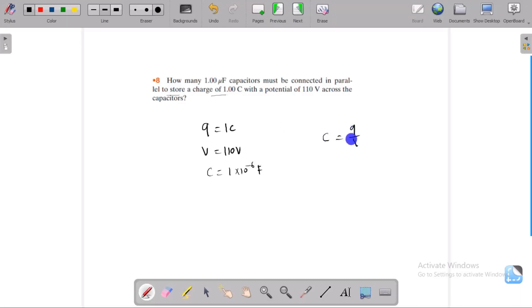The formula is: capacitor equals q by v. Q equals cv, and c equals q by v. This is the formula from this.